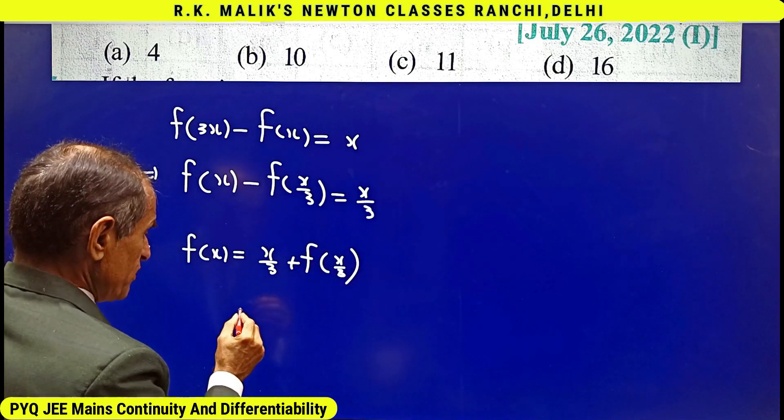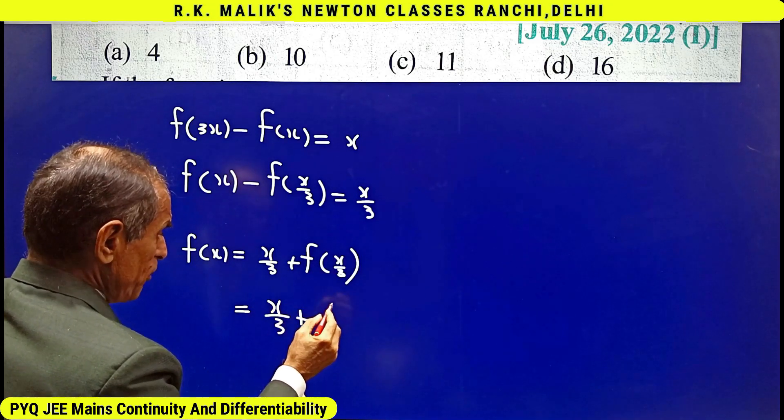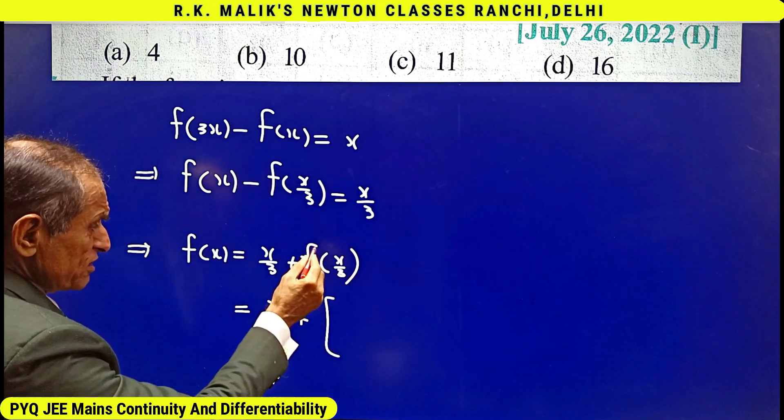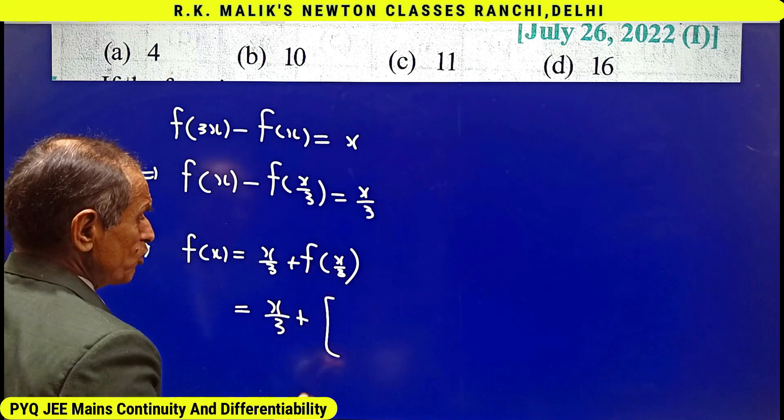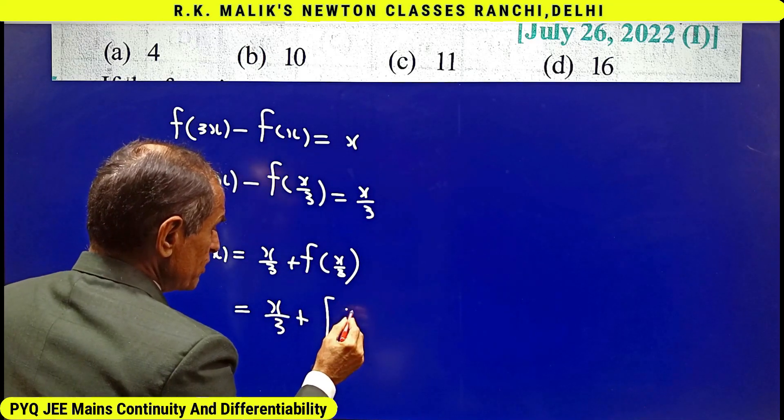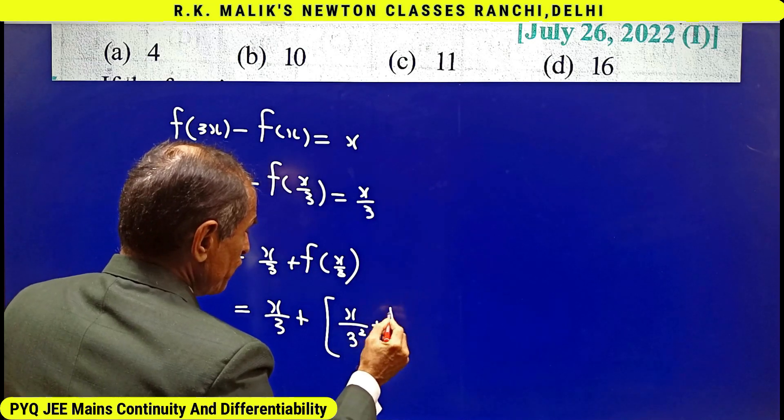And now again I use the same operation. Then keeping this thing in mind, the value of f(x/3) will be x/9 + f(x/9).